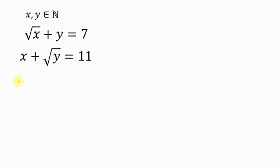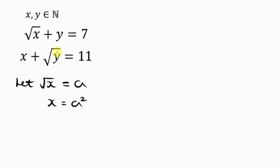Our first step towards solving this question is to let the square root of x be equal to a, so removing the radical sign, x will be equal to a squared. We do the same thing to the square root of y: let the square root of y be equal to b, so y will be equal to b squared.